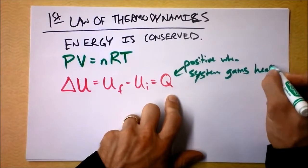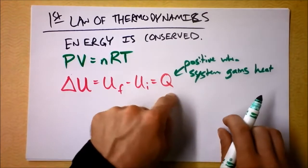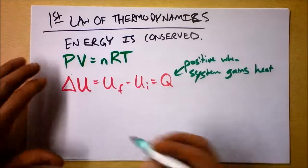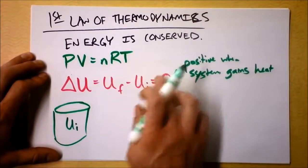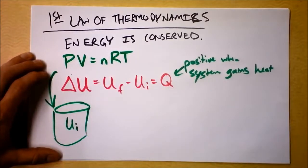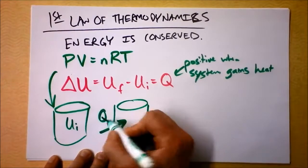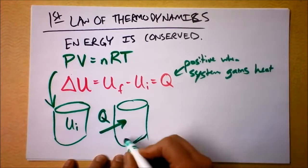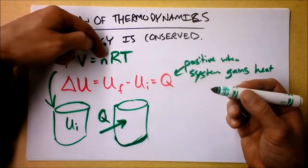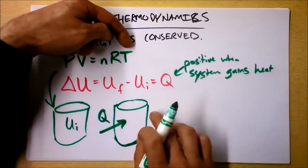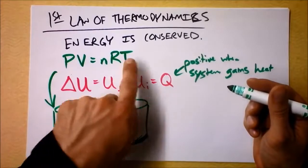If that system is gaining heat, then Q is positive. That makes sense — the final energy will be greater than the initial energy. So the change in energy can be the heat gained by the system. There's like a canister of gas with some initial energy given by NRT or PV, because they're the same thing. I'm adding some heat Q to it, and as a result the temperature will increase.